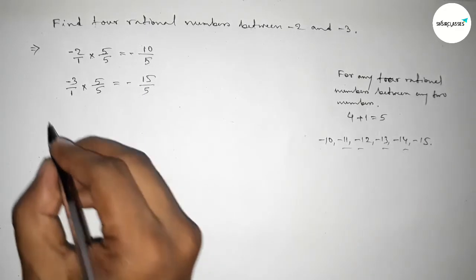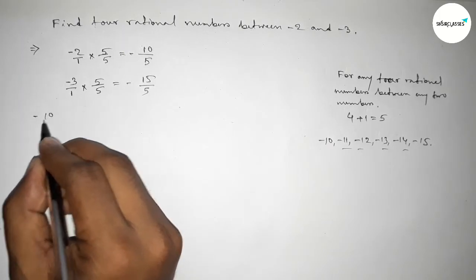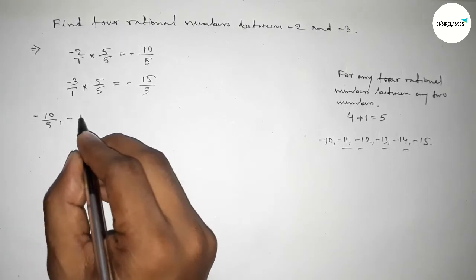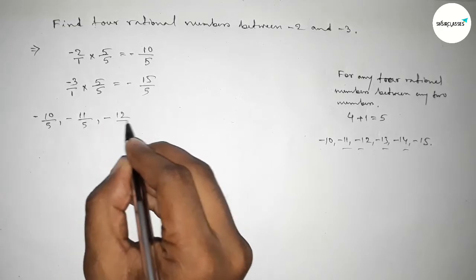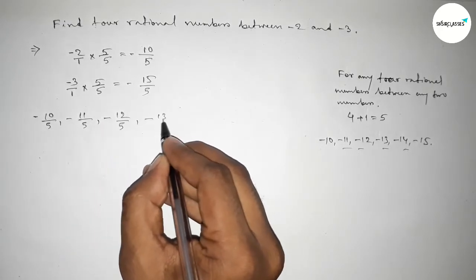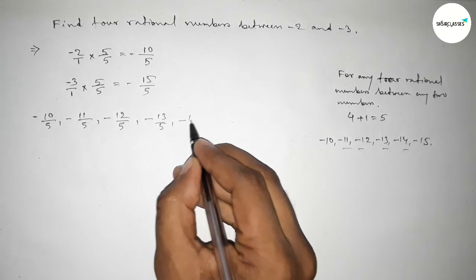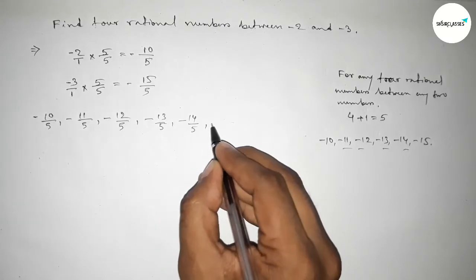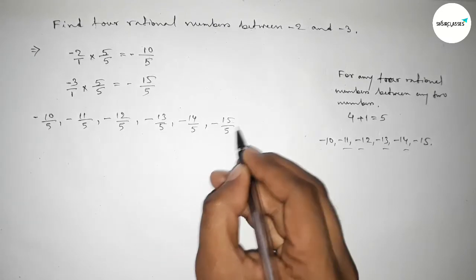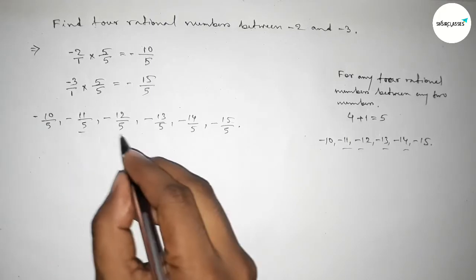Now write down here all the rational numbers: minus 10 over 5, minus 11 over 5, minus 12 over 5, minus 13 over 5, minus 14 over 5, minus 15 over 5. So among these, these are the four required rational numbers between minus 2 and minus 3.